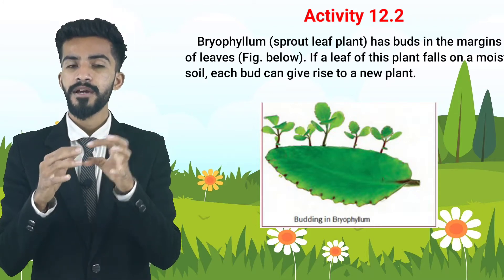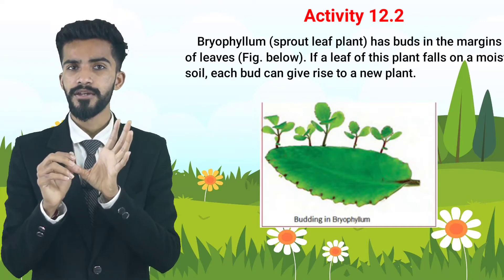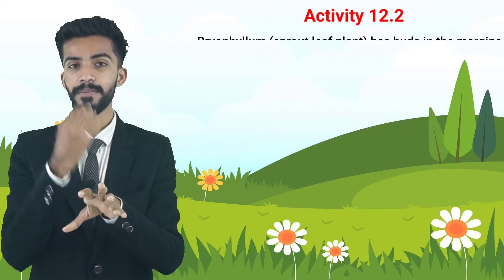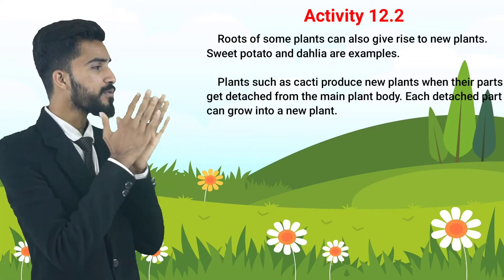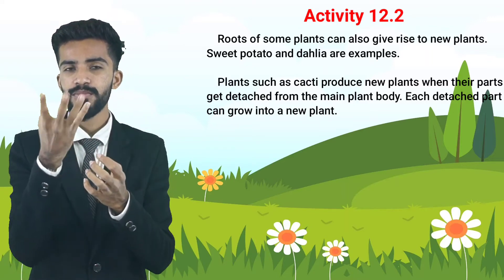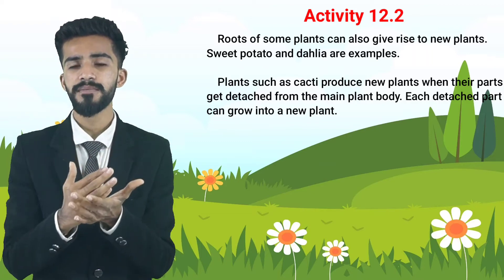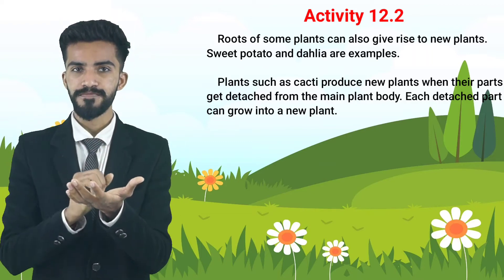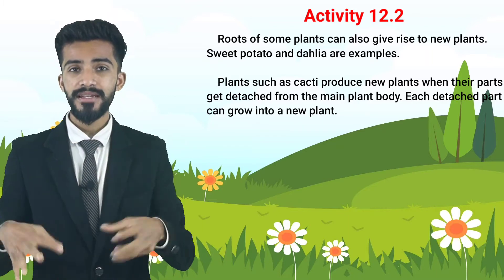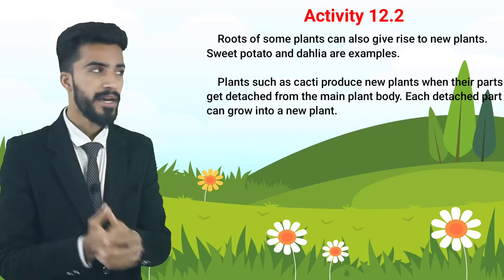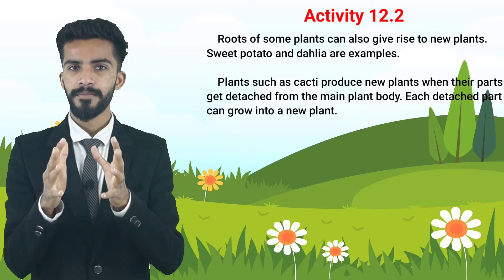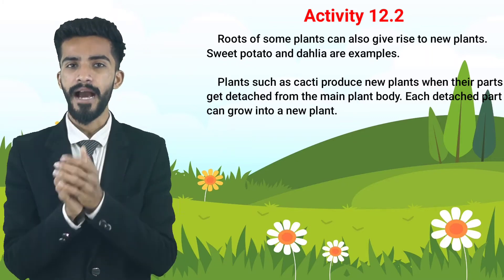So to summarize: potato propagates through eyes, ginger and turmeric also through buds and roots, and Bryophyllum through buds on leaf margins. Now, the roots of some plants can also give rise to new plants.